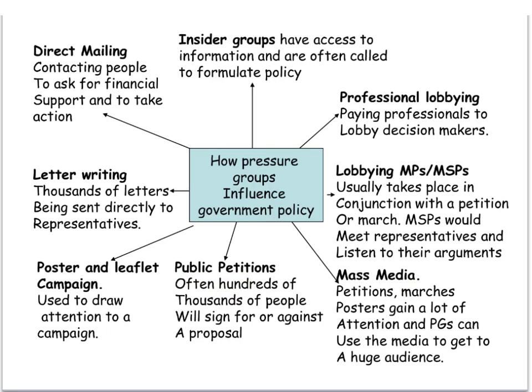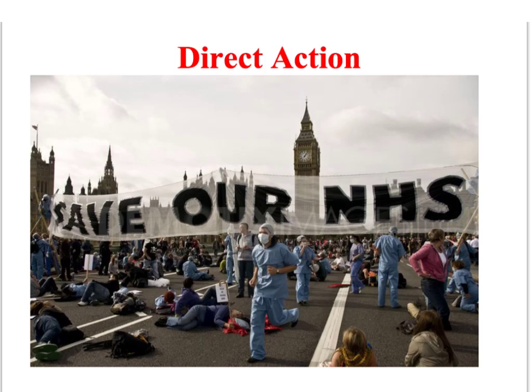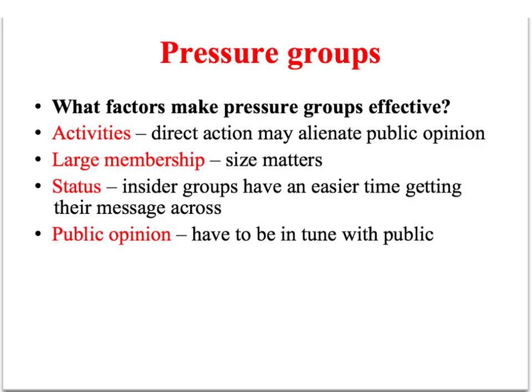Pressure groups that have a lot of money have the advantage of hiring a professional lobbyist — people who have perhaps worked in politics before and are selling their contacts and knowledge of the political system. One type of method that has probably increased in recent years is the use of direct action, which often involves pressure groups mobilising their members to take part in mass acts of civil disobedience to draw attention to a particular issue. For example, UK Uncut organised a demonstration where they blocked Westminster Bridge to campaign against the government's NHS bill.